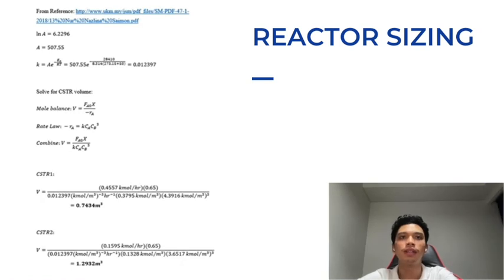Lastly, it is about reactor sizing. First, construct a stoichiometric table as usual with notation 0 as feed, 1 as CSTR1 products, and 2 as CSTR2 products. Then, by substituting both compositions X as 0.65 and converting everything in terms of FA0, we can get a flow rate in this equation form. Finally, we use values from reference to obtain the rate constant which is 0.012397. By combining the mole balance and elementary rate law of reaction, we get the final equation where V equals FA0 X divided by the rate constant times CA CB to the power of 3, which gives us the final volume for both CSTRs: 0.7434 m³ for CSTR1 and 1.2932 m³ for CSTR2.